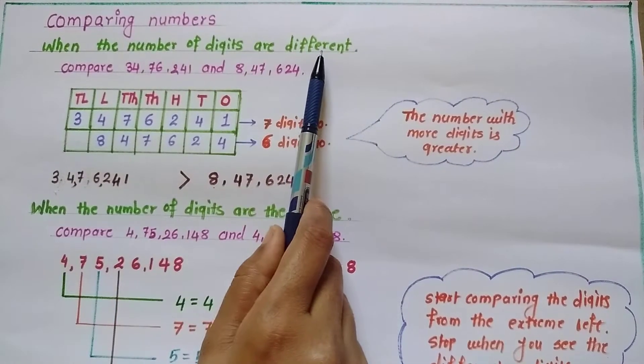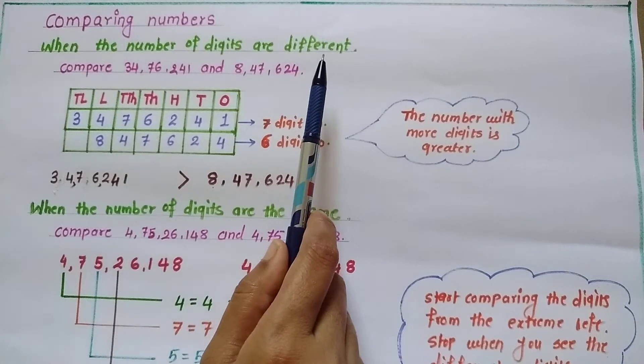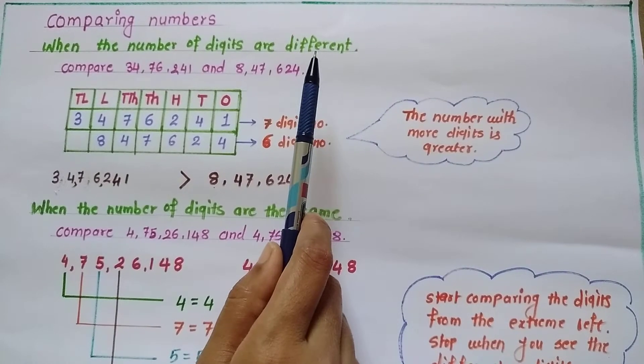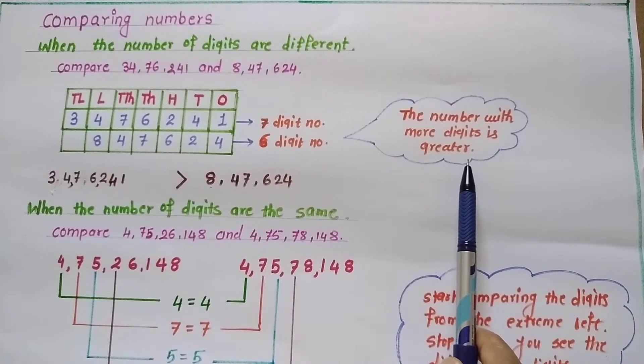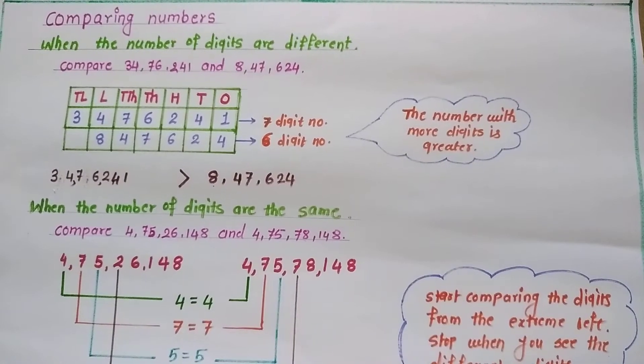When the number of digits are different, it is easy to compare the two numbers, whether it is greater or smaller. Because the number with more digits is always greater and number with smaller digits is always smaller.